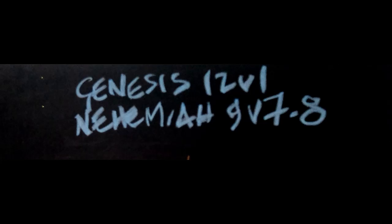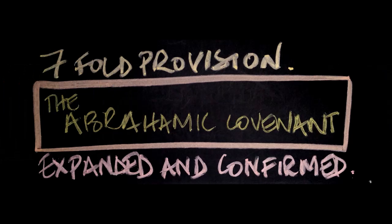Then in chapter 12 verse 1 we read: 'Now the Lord had said to Abram, get thee out of thy country and from thy kindred and from thy father's house unto a land that I will show thee.' And then there's a sevenfold provision — the basic issue of the Abrahamic Covenant comes next.